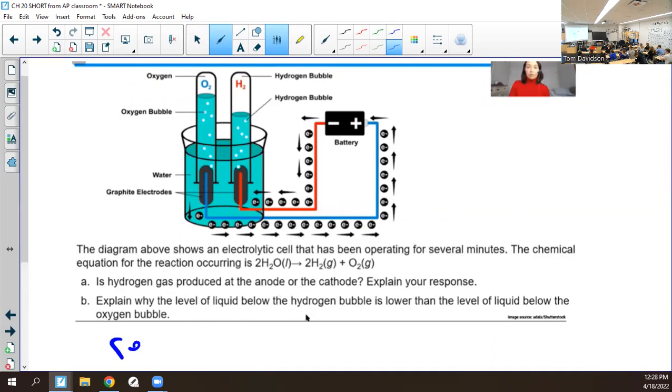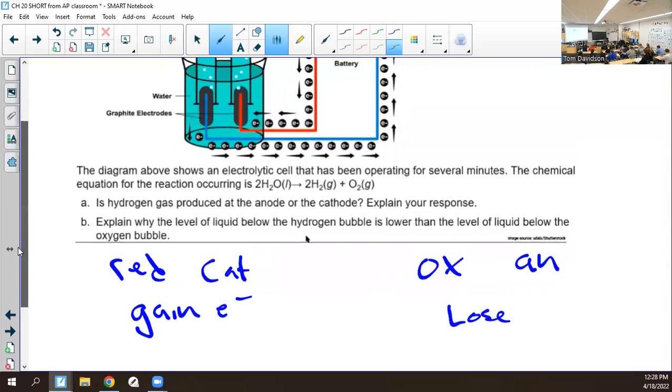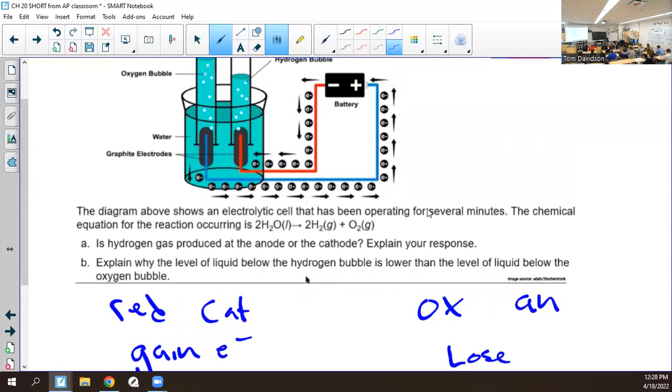What do we know happens at the cathode? We have red cat, which means reduction, which means gain electrons. Oxidation must happen at the anode, which means lose. Which one of these is more electronegative? Oxygen or hydrogen? Which one wants the electrons more? Oxygen. It's the second most electronegative atom on the whole thing.